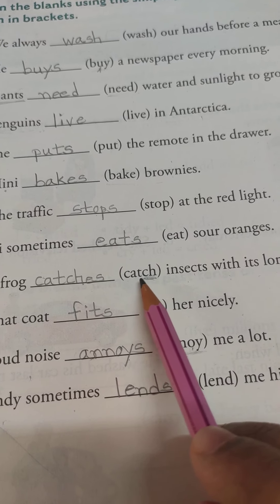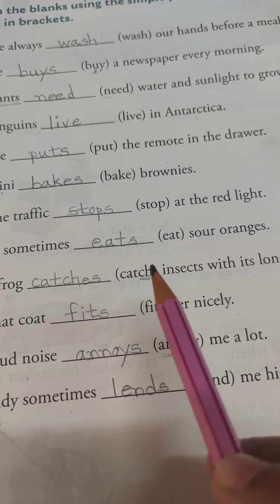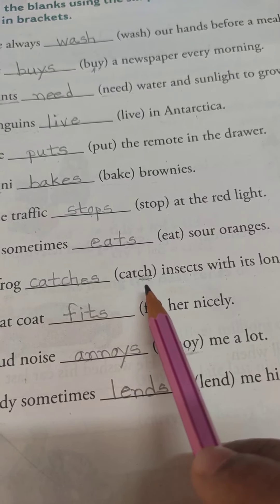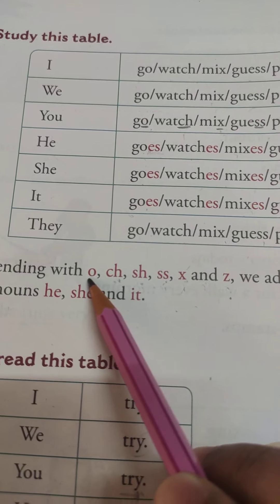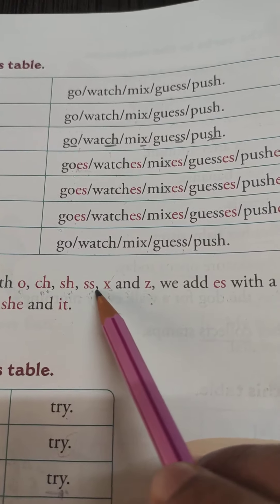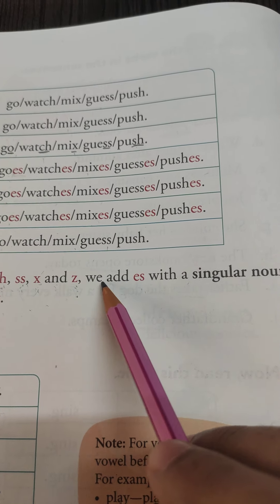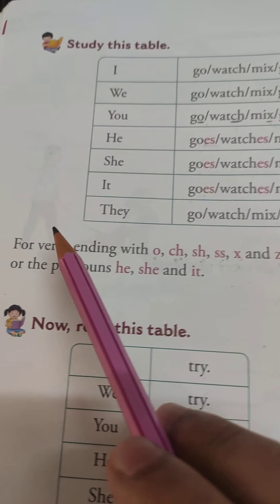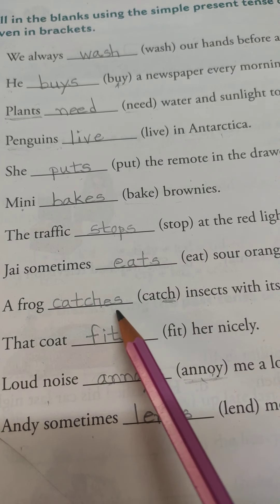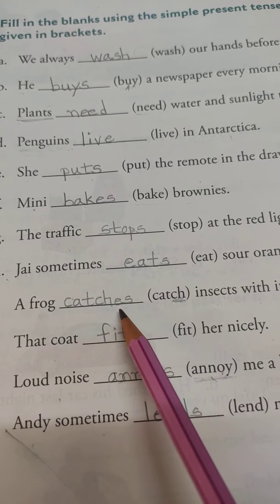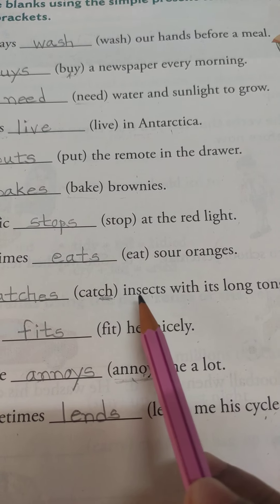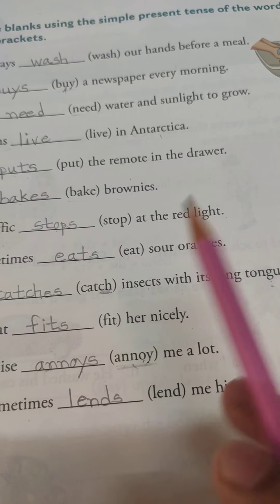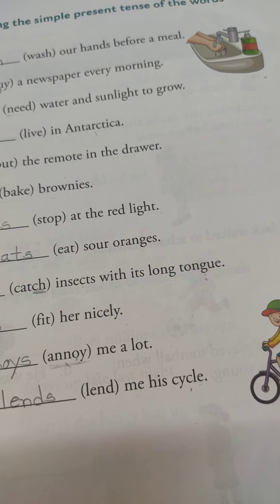Here 'ch' came at the end of 'catch'. For verbs ending with o, ch, sh, ss, x, or z, when used with a singular noun or pronouns he, she, and it, we add 'es'. That's why: a frog catches insects with its long tongue. 'Insects' means small bugs.